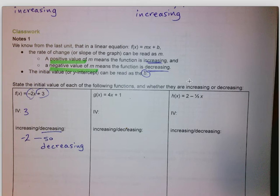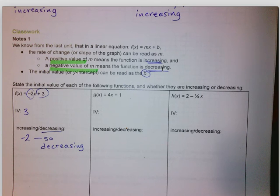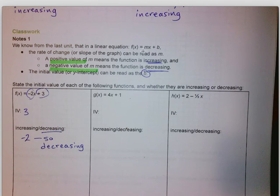We should now be able to recognize features without graphing. For a linear equation, m is an important feature: if m is positive, the function is increasing; if m is negative, the function is decreasing. The y-intercept b is the initial value — the starting point. For example, f(x) = −2x + 3: the +3 is the y-intercept and initial value, while −2 is m and it's negative, so this is a decreasing function.